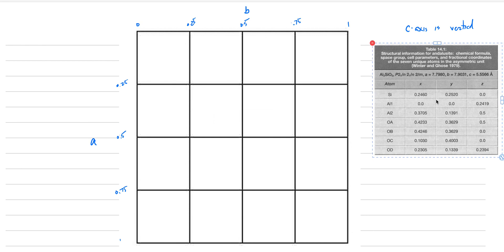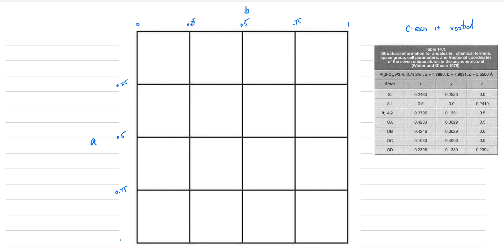I've gone into a textbook that teaches mineralogy and pulled out the structural information for andalusite. It tells us where a lot of the aluminum, silica, and oxygens are in terms of the A, B, and C positions — and we're looking down the C axis. If we take this information and place it on our grid, there should be a silica atom at 0.24 A and 0.25 B. So right here we could put in a silica.